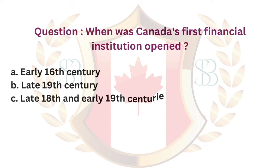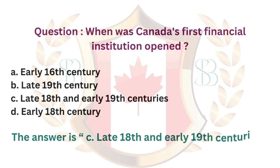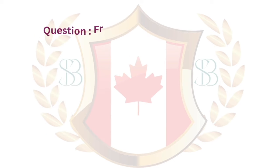Question. When was Canada's first financial institution opened? a. Early 16th century. b. Late 19th century. c. Late 18th and early 19th centuries. d. Early 18th century. The answer is c. Late 18th and early 19th centuries.